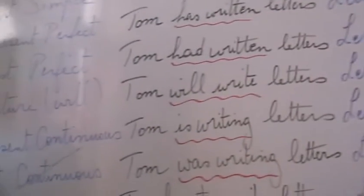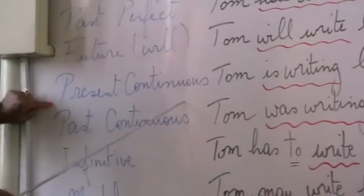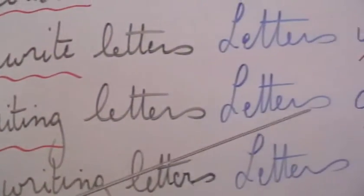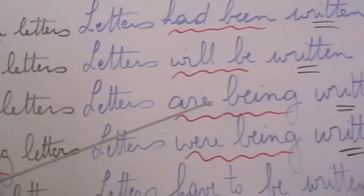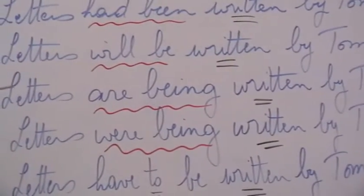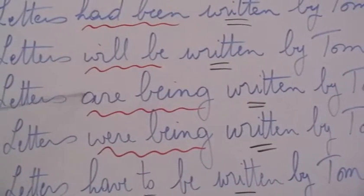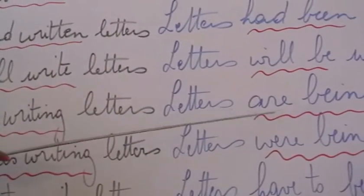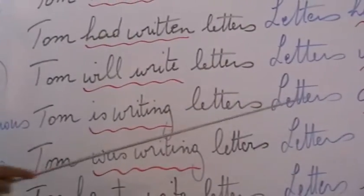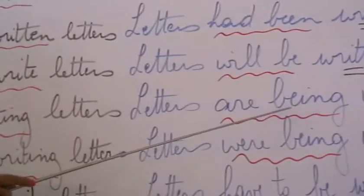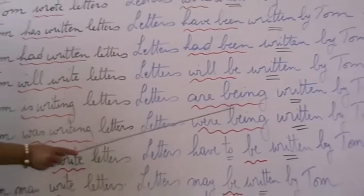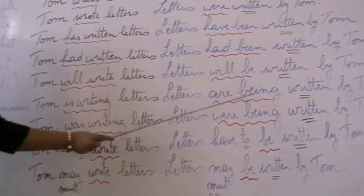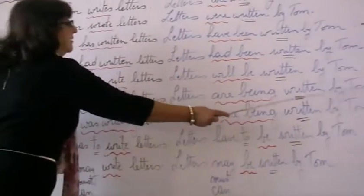Here is the present continuous. Tom is writing letters. The passive is: letters are being written by Tom. This is the present continuous of 'to be'. It's not commonly used, but it is used with the passive — this is one of the very few uses. Pay attention: it's B-E-I-N-G, one E.